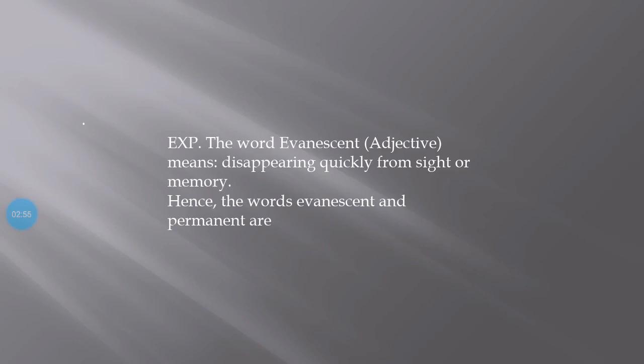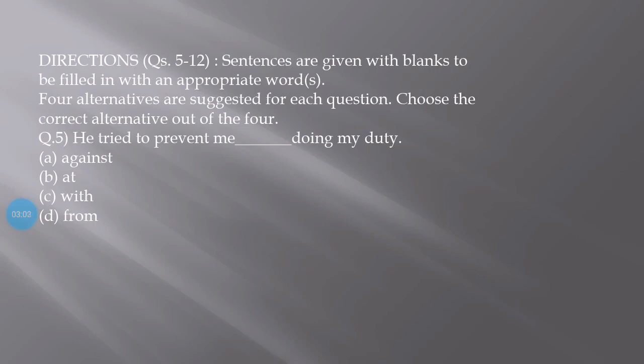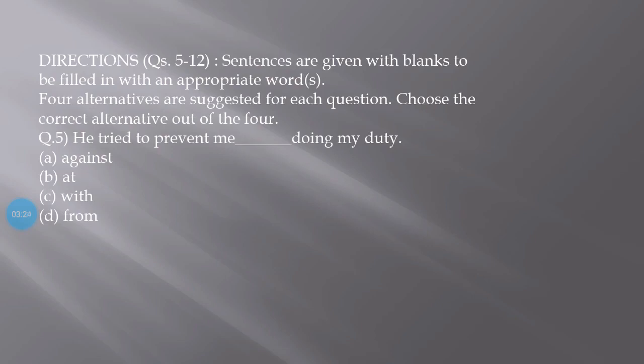Sentences are given with blanks to be filled with an appropriate word. He tried to prevent me from doing my duty. The options are against, at, with, and from. The correct answer is D - he tried to prevent me from doing my duty. If you want to practice more, there are many books available like Renan Martin. You should study parts of speech thoroughly. For synonyms and antonyms, use Oxford word collections. Also read newspapers and magazines to improve your English vocabulary and skills.